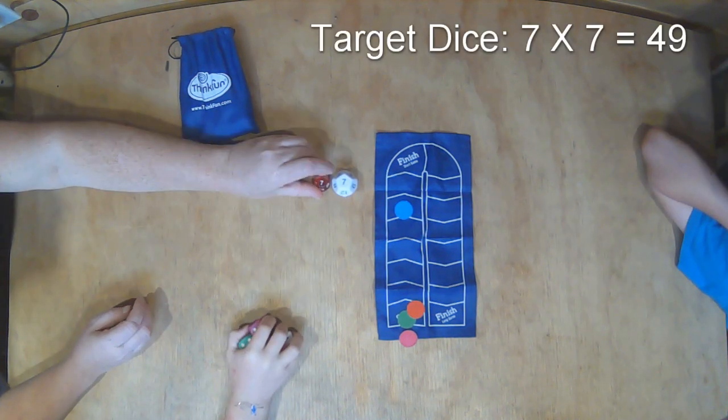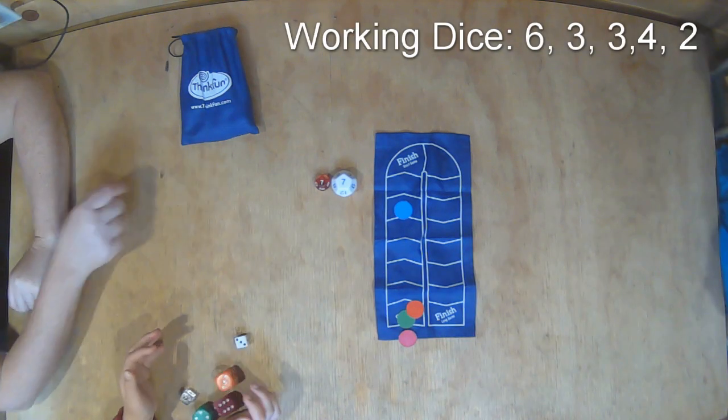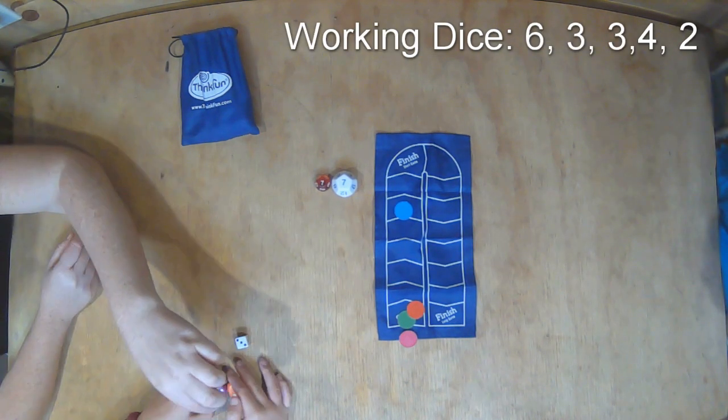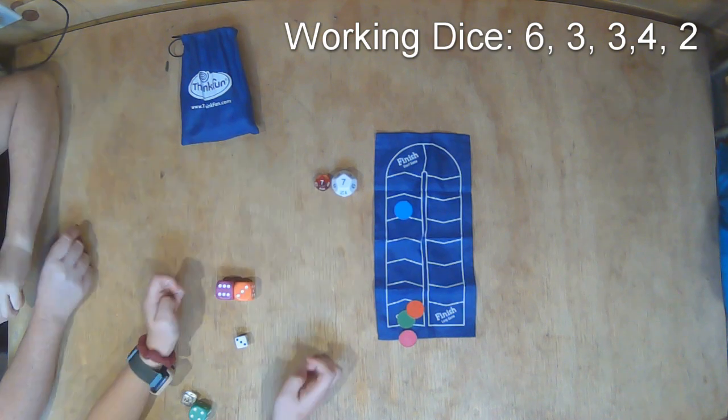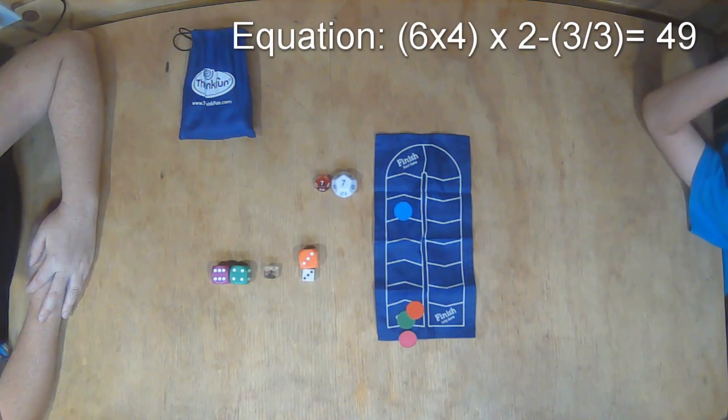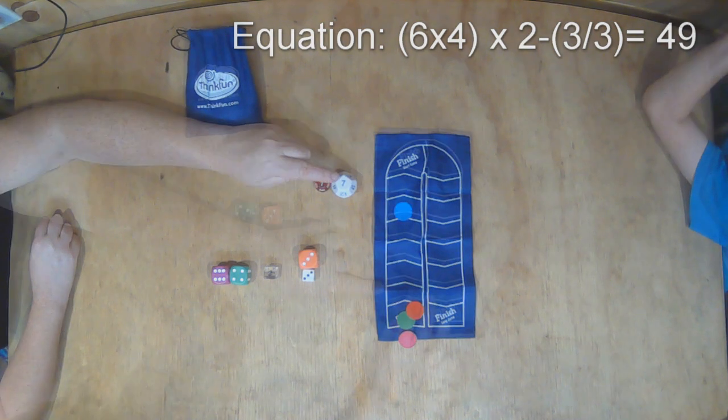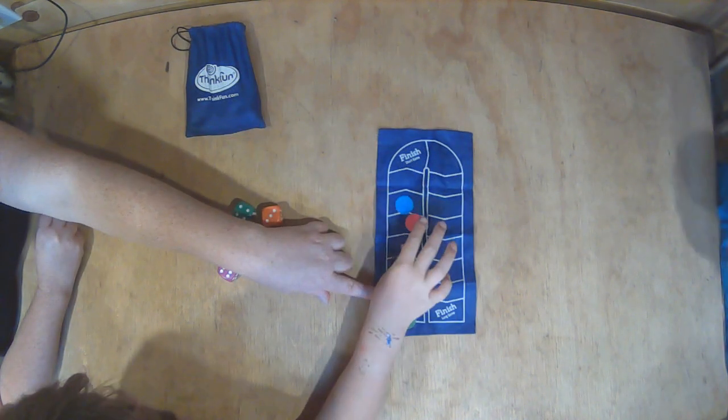Up next, the girl with a target number of 49. If you have littles that struggle with basic math, you could just have them count the pips and match the numbers if that's easier. 6 times 4 times 2 minus 3 divided by 3 gets us 49.